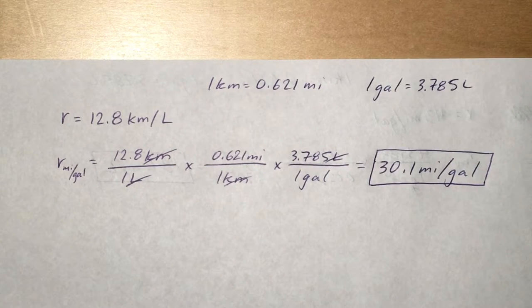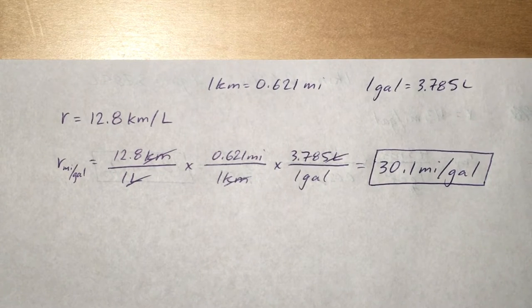Now our units are miles per liter, but we don't want that. We want it in miles per gallon, so we use the other conversion factor, putting liters on top so we can cancel those out and get miles per gallon.